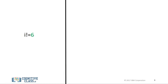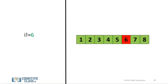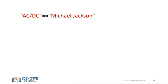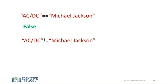The inequality test uses an exclamation mark preceding the equal sign. If two operands are not equal, then the condition becomes true. When the condition is true, the corresponding numbers are marked in green, and red for where the condition is false. If we set i equal to 2, the operator is true, as 2 is not equal to 6. We compare strings as well. Comparing ACDC and Michael Jackson using the equality test, we get false, as the strings are not the same. Using the inequality test, we get true, as the strings are different. See the labs for more examples.